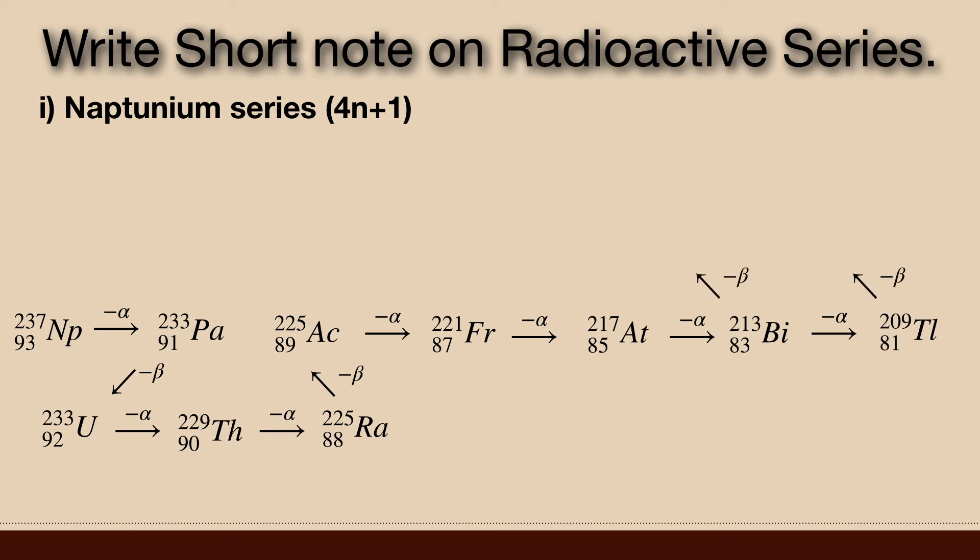Third, the other series contain gaseous emanations, thoron, radon and actinon but neptunium series does not contain any gaseous emanations. Francium 221 and astatine 217 are direct and successive members of the neptunium series.